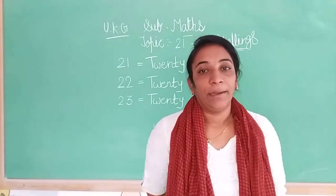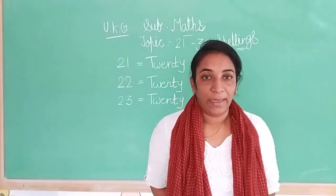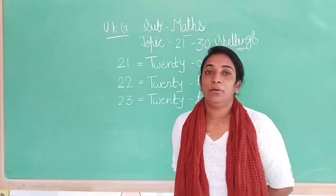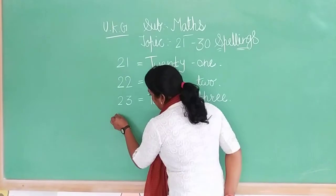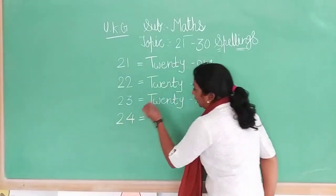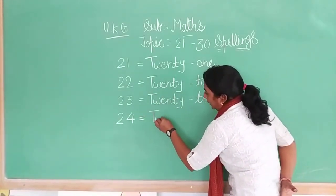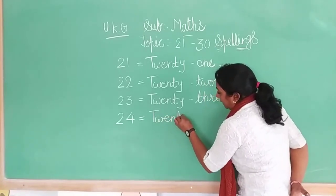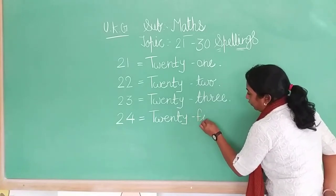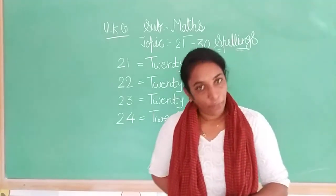Twenty: T, W, E, N, T, Y — 20. And 4 — four: F, O, U, R. First we write in figure 24. Twenty: T, W, E, N, T, Y. Then four: F, O, U, R. Twenty-four. 24.